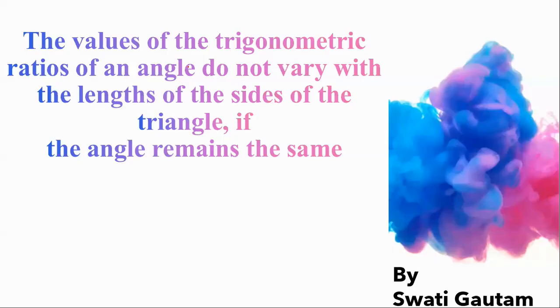That is what we have to prove here. If you have any problem in any other topic of mathematics, please write in the comment section so I can make a proper video on that. Now, the formal statement of trigonometry is: the values of trigonometric ratios of an angle do not vary with the length of the side of the triangle.